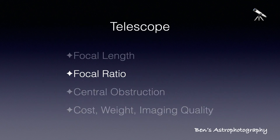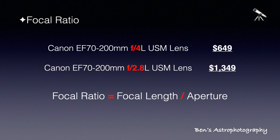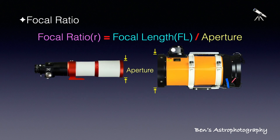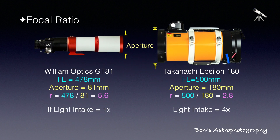Next, focal ratio. If you have experience shopping camera lenses, you should know how critical the focal ratio is. If f/4 is economy class, f/2.8 and below is definitely first class. The reason behind that is the aperture — focal ratio equals focal length divided by aperture. For example, my GT81 and Epsilon 180 have a similar focal length, both around 500mm. But the Epsilon 180 has an aperture twice as big as the GT81's, so its focal ratio, f/2.8, is half of the GT81's f/5.9.